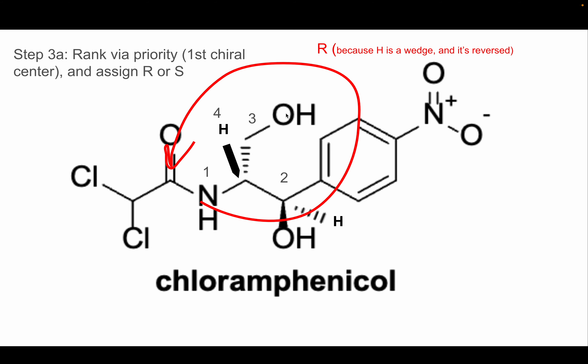So how do we assign R or S? We draw going from 1 to 2 to 3 in ascending order and see if we go clockwise or counterclockwise. Going 1, 2, 3, 4 — that's counterclockwise, so you would think it's S. But it's not S, and here's why: the hydrogen is a wedge. When assigning R and S, you need the fourth priority group to be a dash — that's how we keep everything relative for IUPAC naming. So we actually need to flip this molecule around, and when you do that, instead of going counterclockwise it goes clockwise. Clockwise means R. So this chiral center is R.